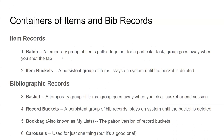For items, there's something I'm calling a batch, which is a temporary group of items pulled together for a particular task, but there's no container involved — they're just a way to pull things together. Then there's also item buckets, which is a way to put a group of items in a container that stays on the system until the bucket is deleted. For bibliographic records, there are baskets, which is a temporary group of title records — bibliographic records — that goes away when you clear the basket or end your Evergreen session. But the persistent things are record buckets, which is a container for bibliographic records that stays on the system until the bucket is deleted.